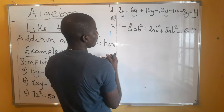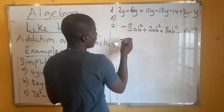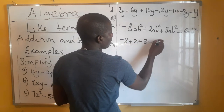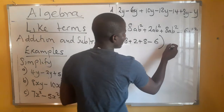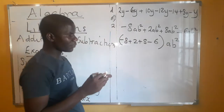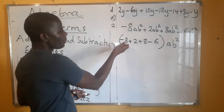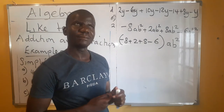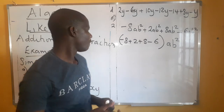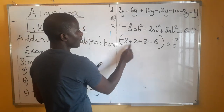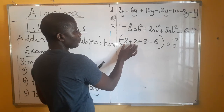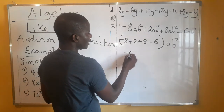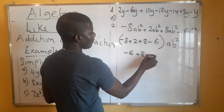Now let's look at this next one. What is common? We get the coefficients, then we leave our ab² alone outside, and we work with these integers — we teach integers in grade 7 and grade 8. We've got two different signs, so how do we simplify? When signs are different, you subtract the smaller number and keep the sign of the larger number. We're going to get negative 6 plus 8 minus 6.